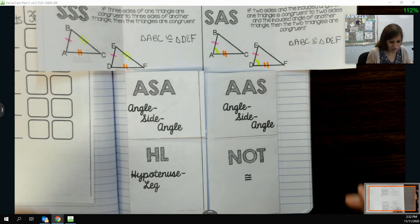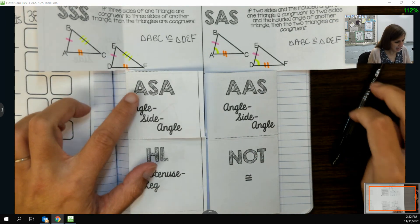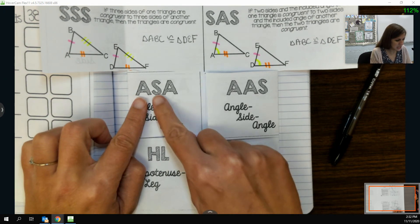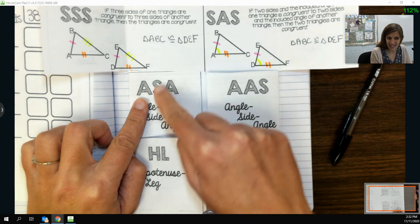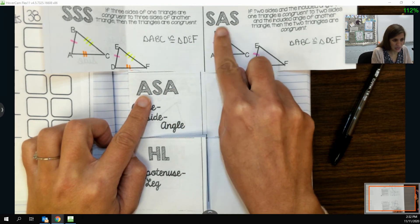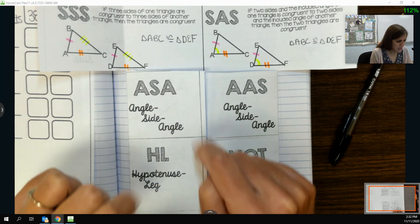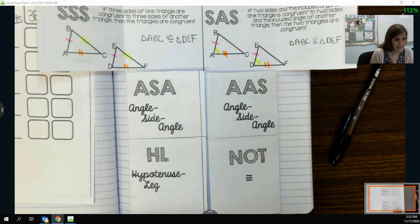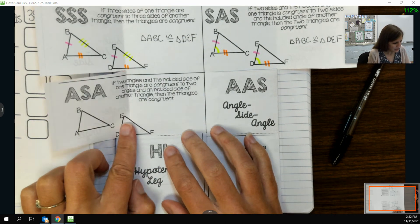Another shortcut that we found was our angle side angle theorem. It's almost the inverse of this one, where instead of knowing two sides, one angle, I know two angles, and specifically the side in between them. So again, marking up my picture is super important here.